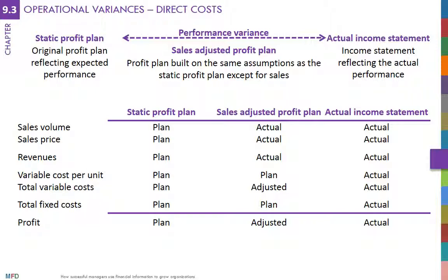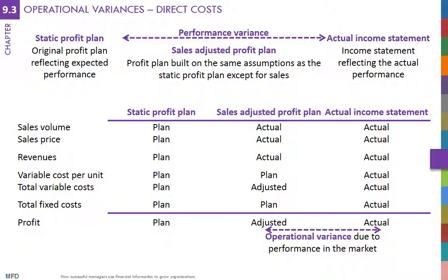The analysis of operational variances explains the difference between the profit in the sales-adjusted profit plan and the actual profit. Operational variances are classified into variances associated with direct costs and those associated with indirect costs.